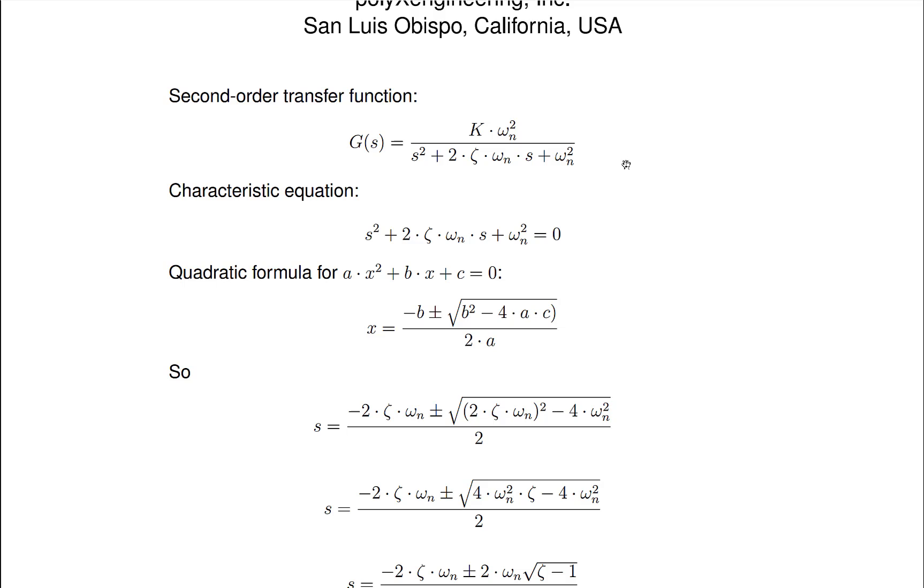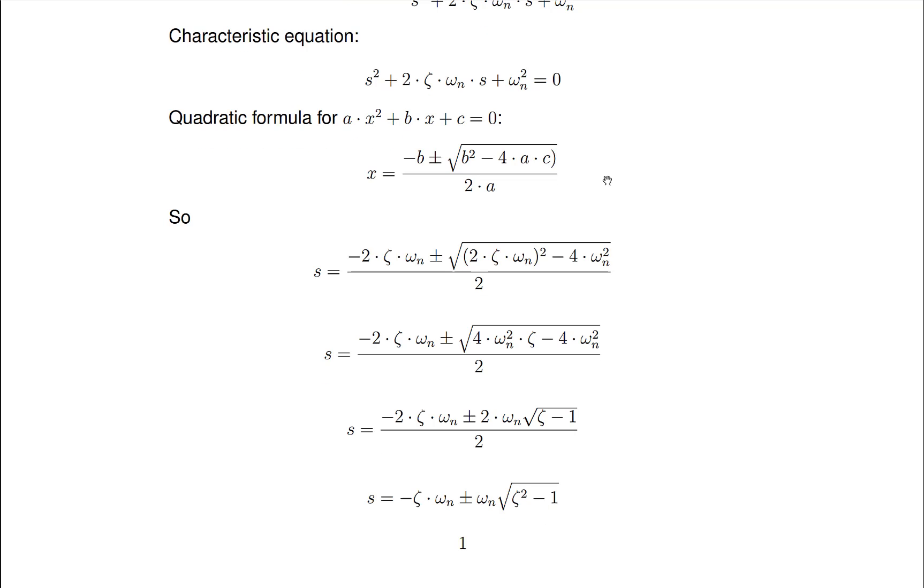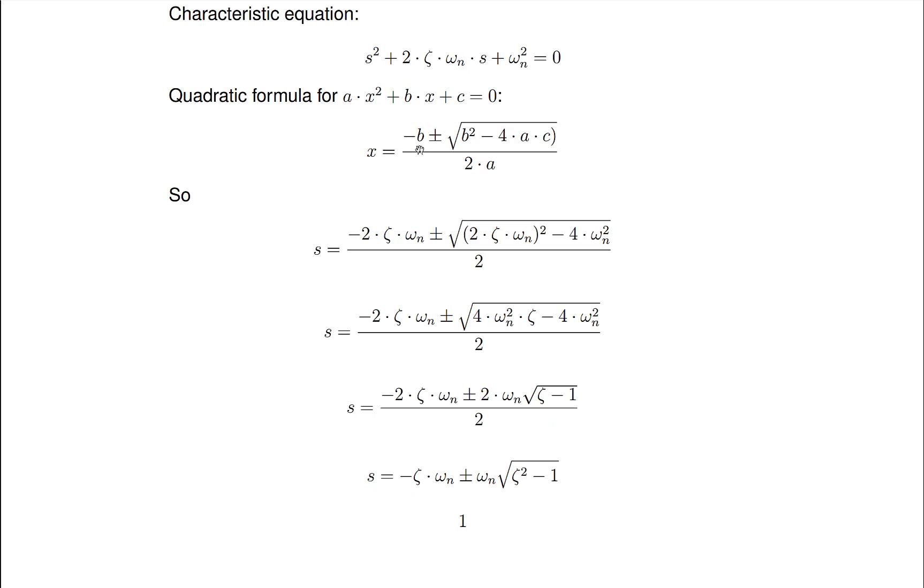So we start off and we get the characteristic equation for this system. You get that simply by getting the denominator of the system and setting it equal to zero as shown. And then we use the quadratic formula that has this form. There's our second-order equation and if we want the roots of that second-order equation we use this quadratic formula.